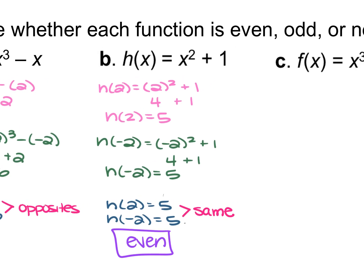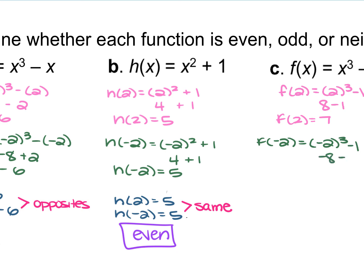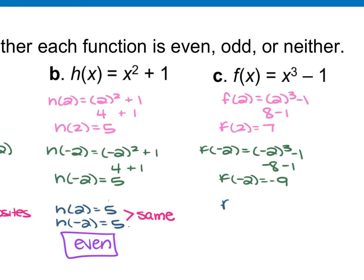For example c, f(x) = x³ - 1. Find f(2): 2³ - 1 = 8 - 1 = 7. Then f(-2): (-2)³ - 1 = -8 - 1 = -9. Comparing these: f(2) = 7 and f(-2) = -9. These two numbers are totally different, so this function is neither odd nor even.